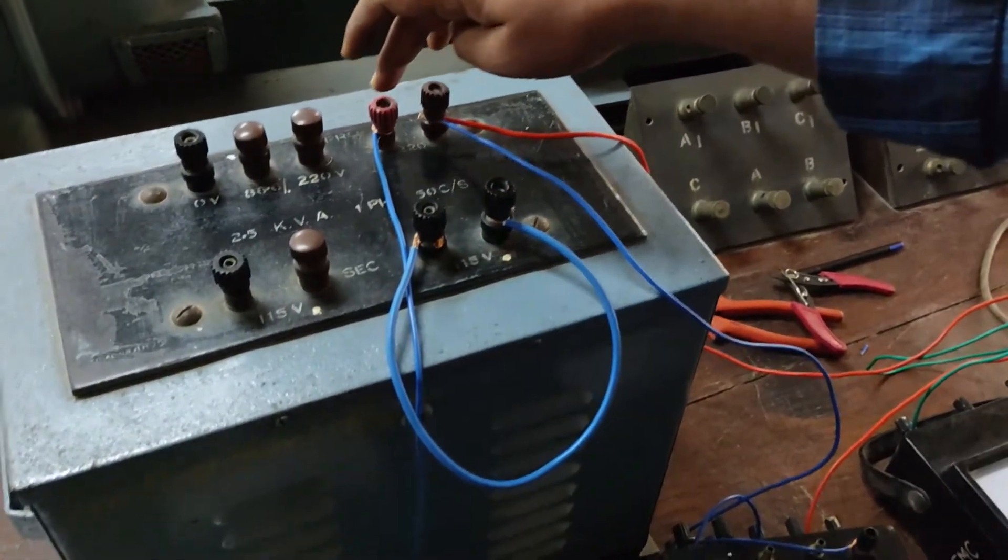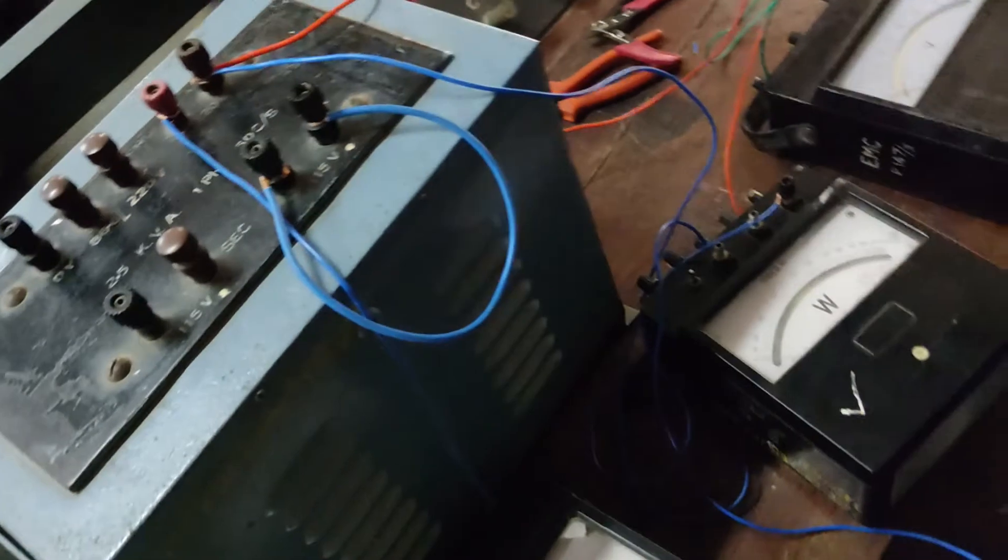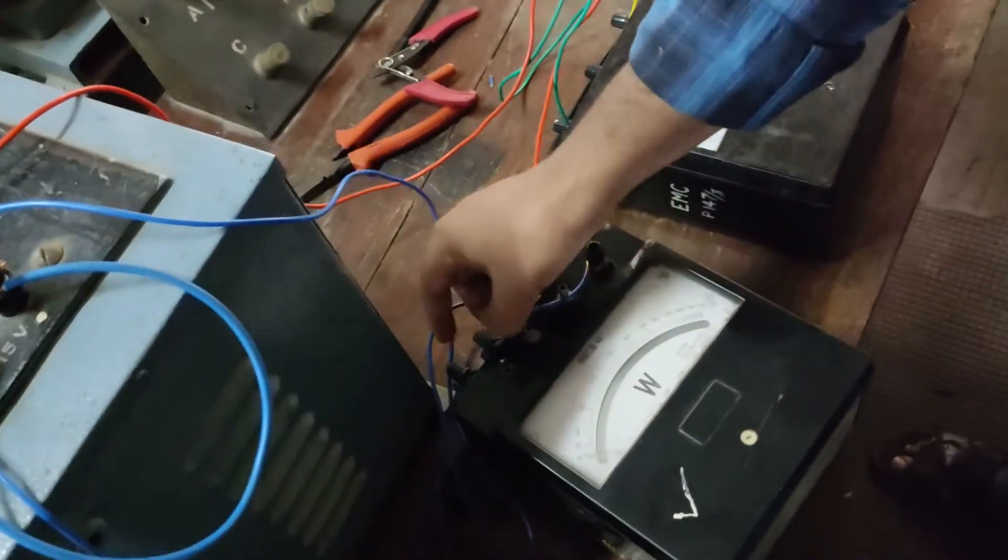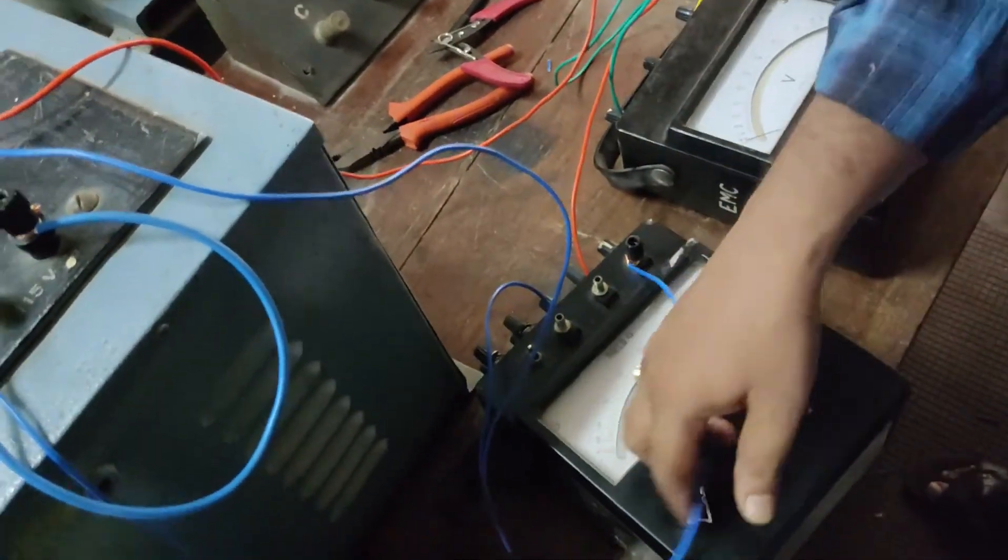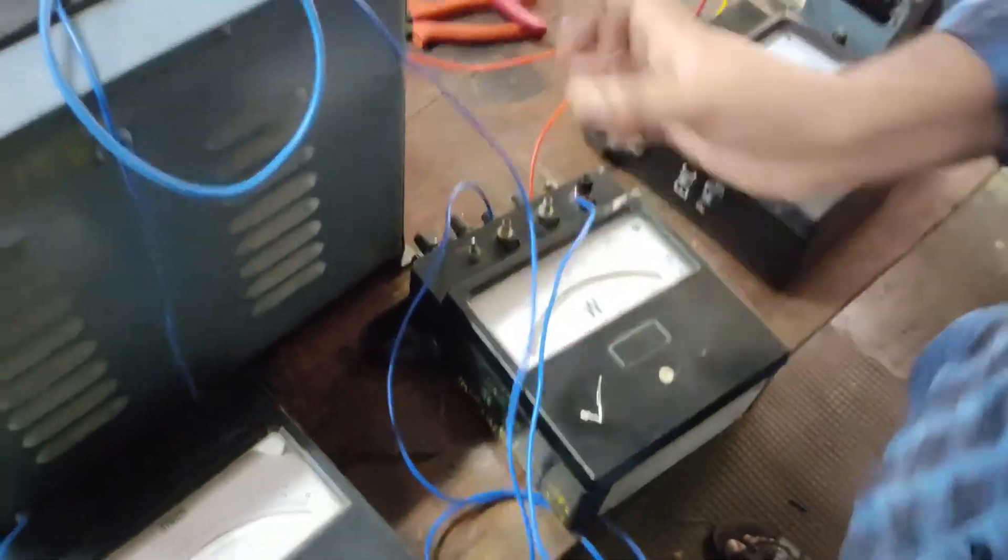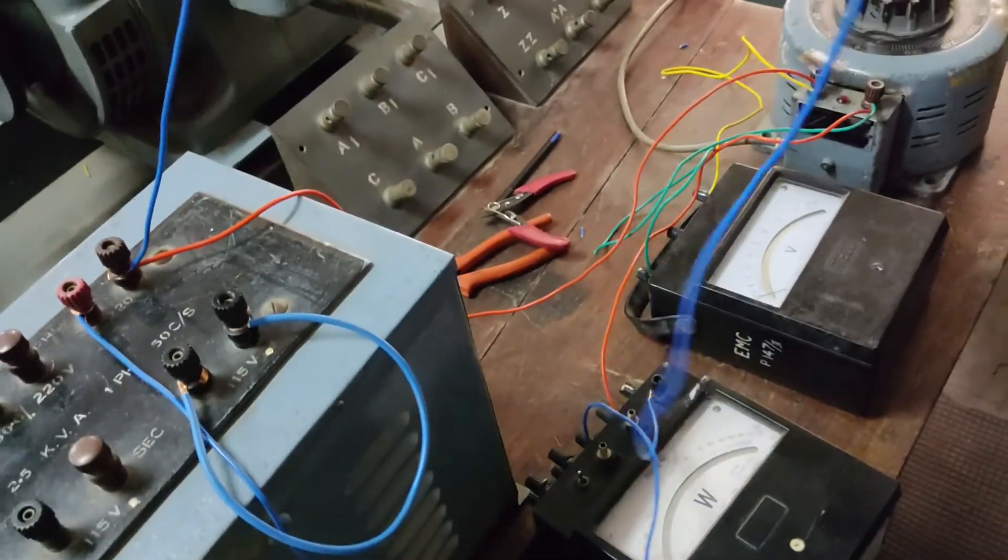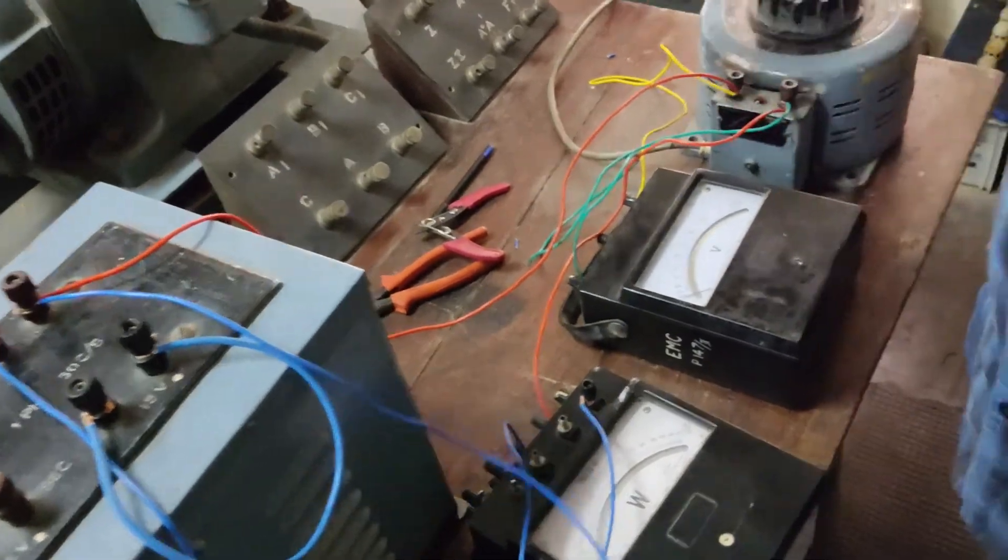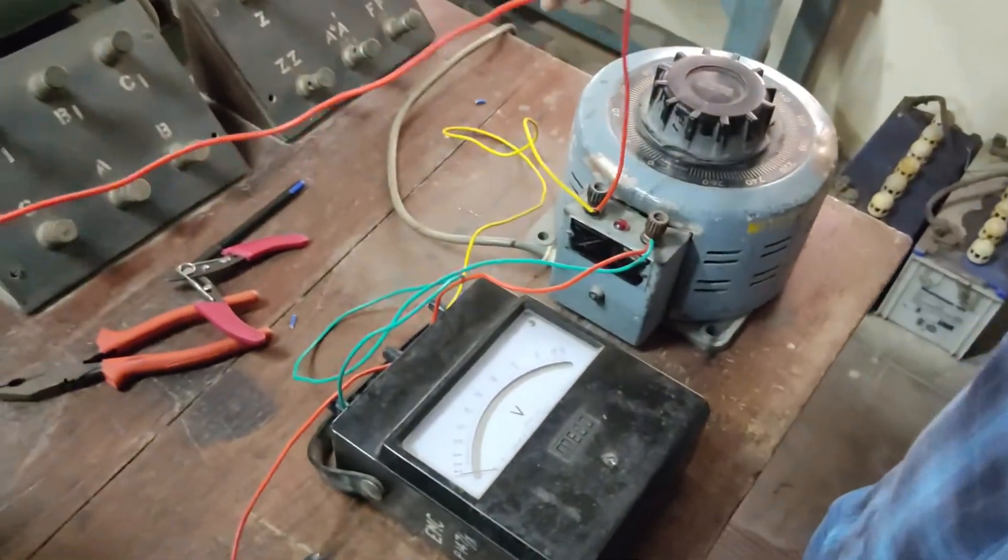The wattmeter voltage is connected to one more terminal of the input transformer. The neutral terminal of the auto transformer is connected to the neutral terminal of the single phase two winding transformer.